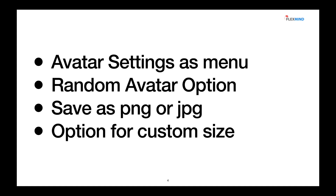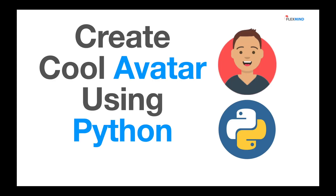You can also use the random avatar option and save it as a PNG file. Beyond that, you can add the ability to save as a JPG file. One limitation is that the output is fixed at 280x280 pixels — you can change that by adding a custom size option, letting users choose 600x600 or 1200x1200, and saving it as a JPG for a high-quality image. That's all for today, friends — I hope you liked the video and the concept of creating cool avatars.